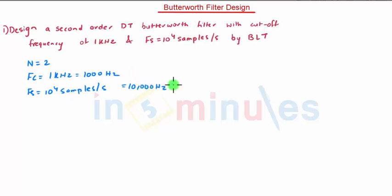Now we have to calculate the required design specification of digital filter. We know that F equals F upon FS. That is FC equals FC upon FS. So FC is given as 1000 upon 10,000, that is 0.1 cycle per sample. Now we can calculate the angular frequency.